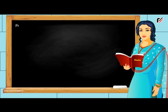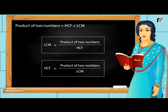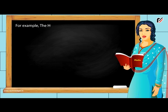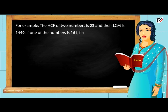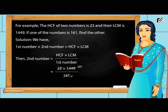Relationship between HCF and LCM: Product of two numbers = HCF × LCM. LCM = Product of two numbers ÷ HCF. HCF = Product of two numbers ÷ LCM. For example, the HCF of two numbers is 23 and their LCM is 1449. If one of the numbers is 161, find the other. Solution: First number × Second number = HCF × LCM. So, Second number = (HCF × LCM) ÷ First number = (23 × 1449) ÷ 161 = 207.